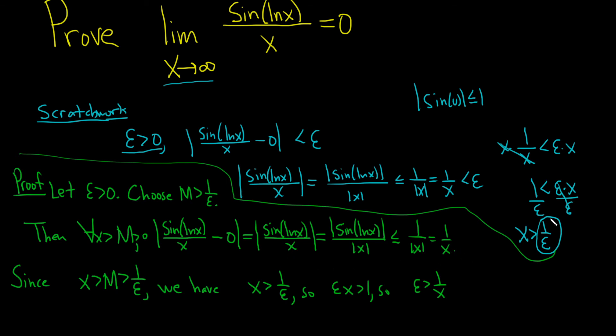So when you get here, you need to reinforce what you did in your scratch work. So you go back, you say, okay, x is bigger than m, which is bigger than 1 over epsilon. So x is bigger than 1 over epsilon. So we have that. Oh, so that means 1 over x is less than epsilon.